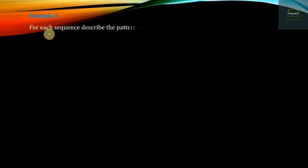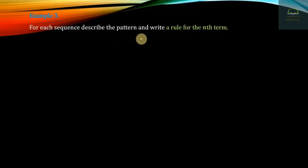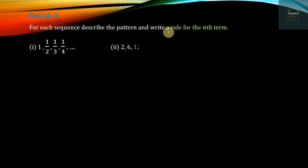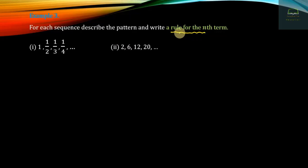In summary, for each sequence, describe the pattern and write a rule for the nth term. The rule for the nth term is derived from the sequence starting at 2.